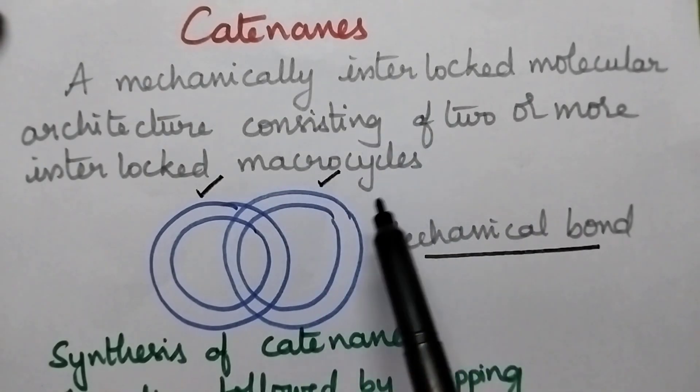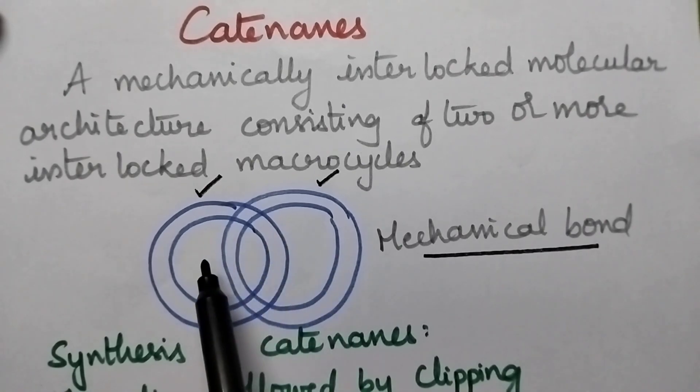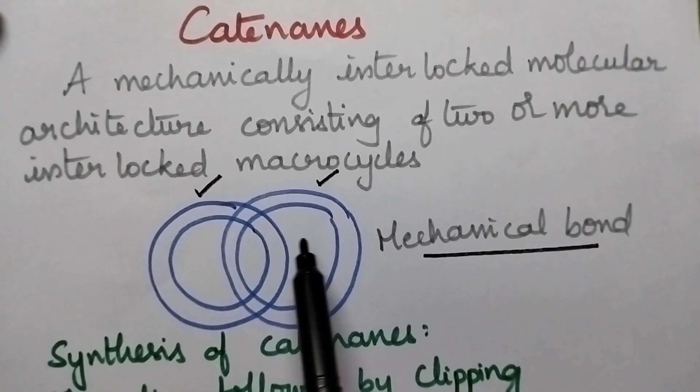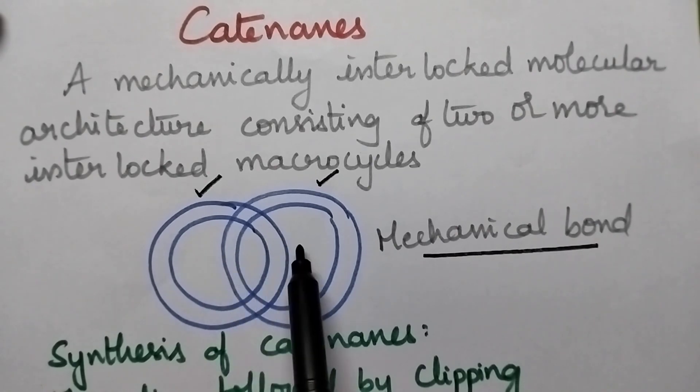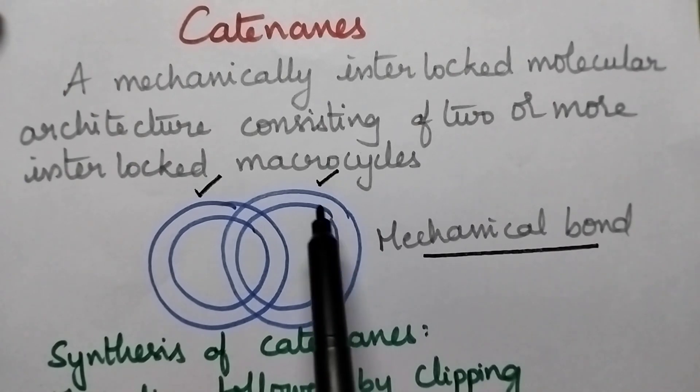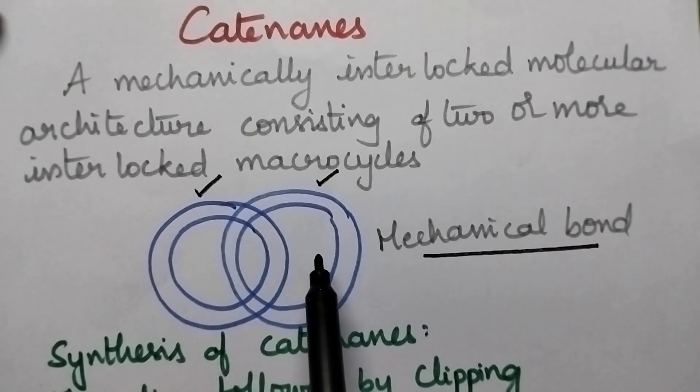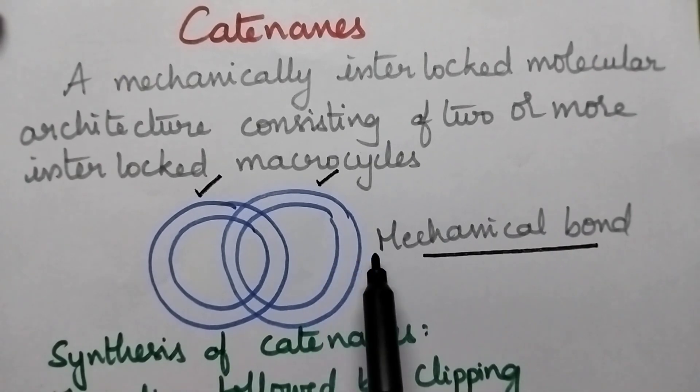Initially moving to the catenanes, generally they consist of two or more interlocked macrocycles. Practically a mechanical bond is present between the macrocycles. So they are also mechanically locked molecular architectures consisting of at least two macrocycles.